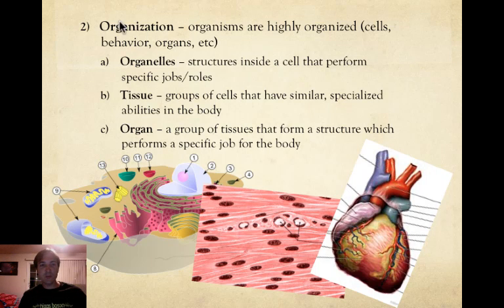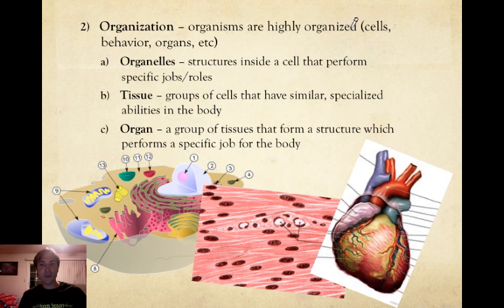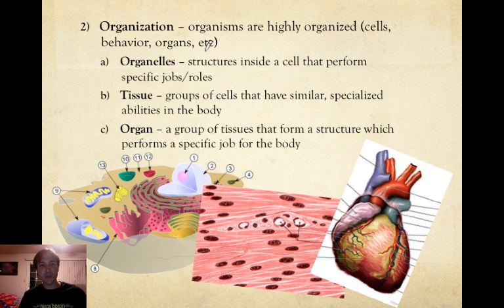Characteristic number two is kind of an intense one. The idea is that life has organization, meaning organisms are highly organized. They have cells, they have behaviors, they have organs. There are many different things within the cell, outside the cells, within the organism, and outside the organism in terms of behavior that have to be organized to keep it going. Here are three examples.